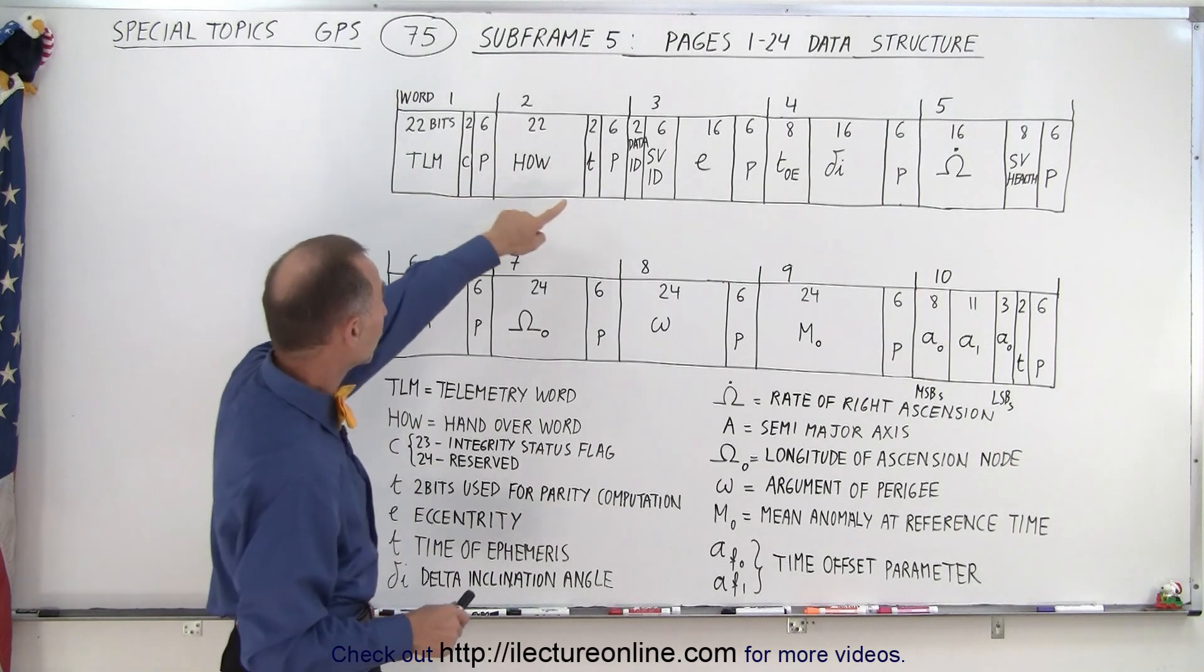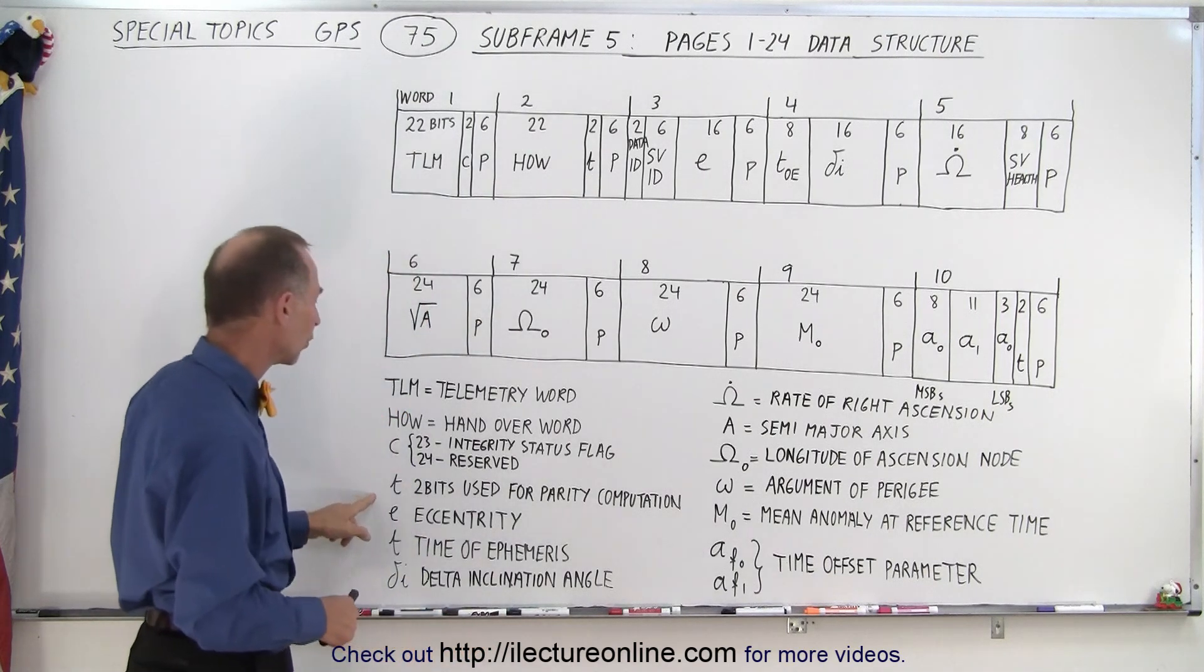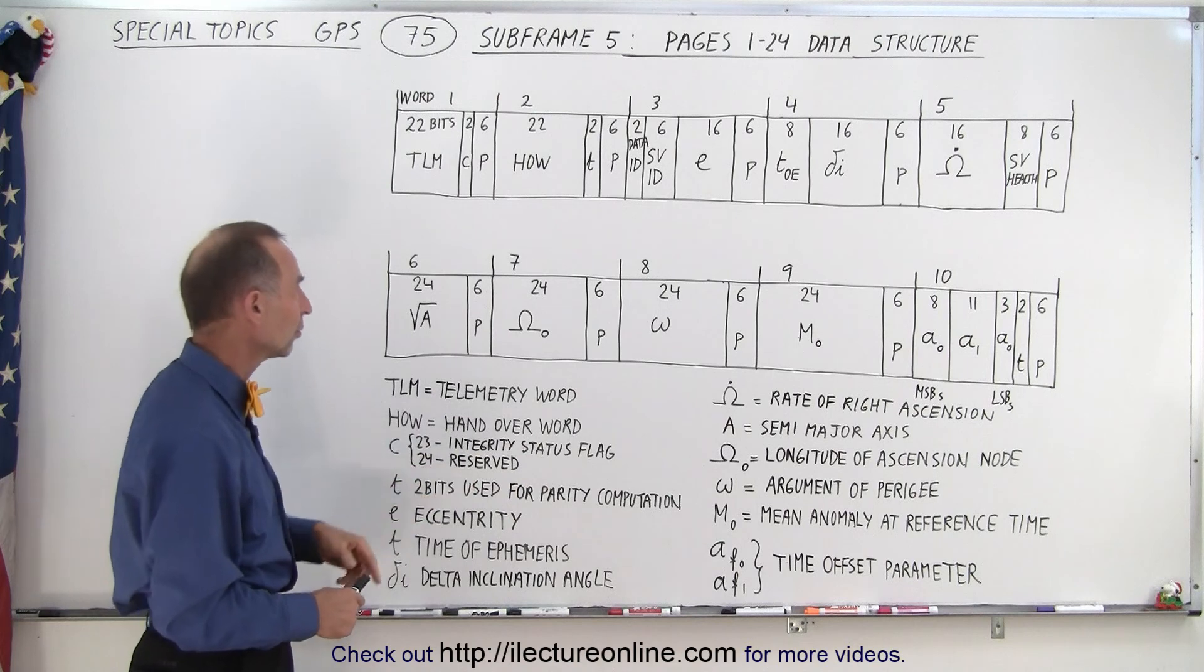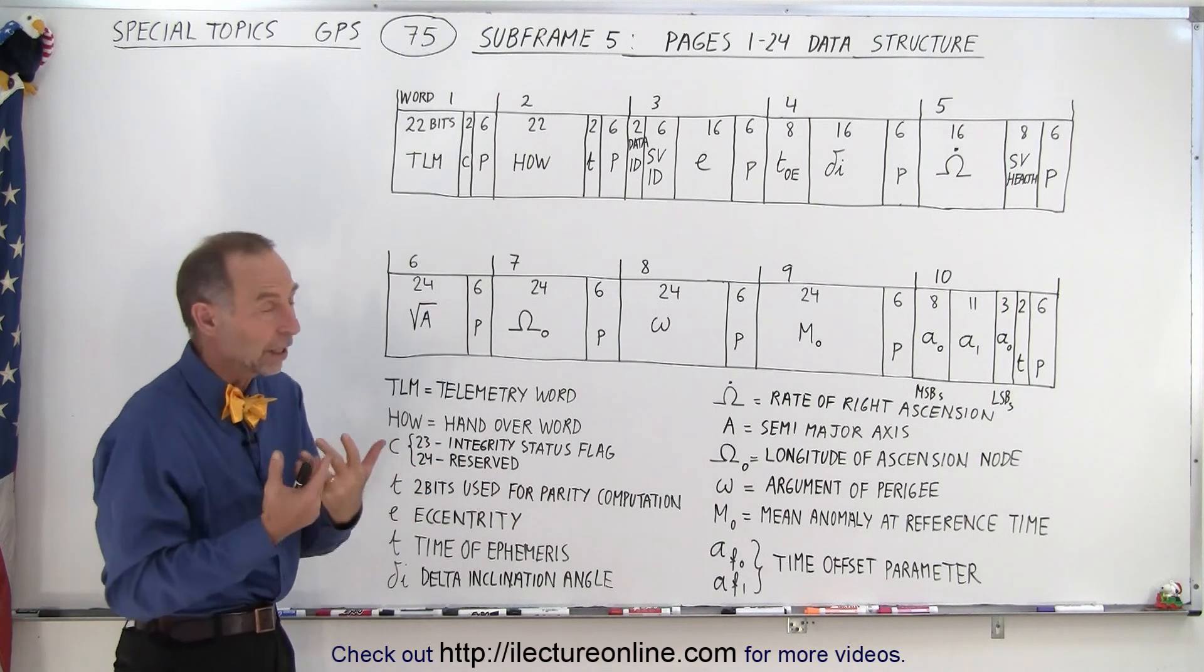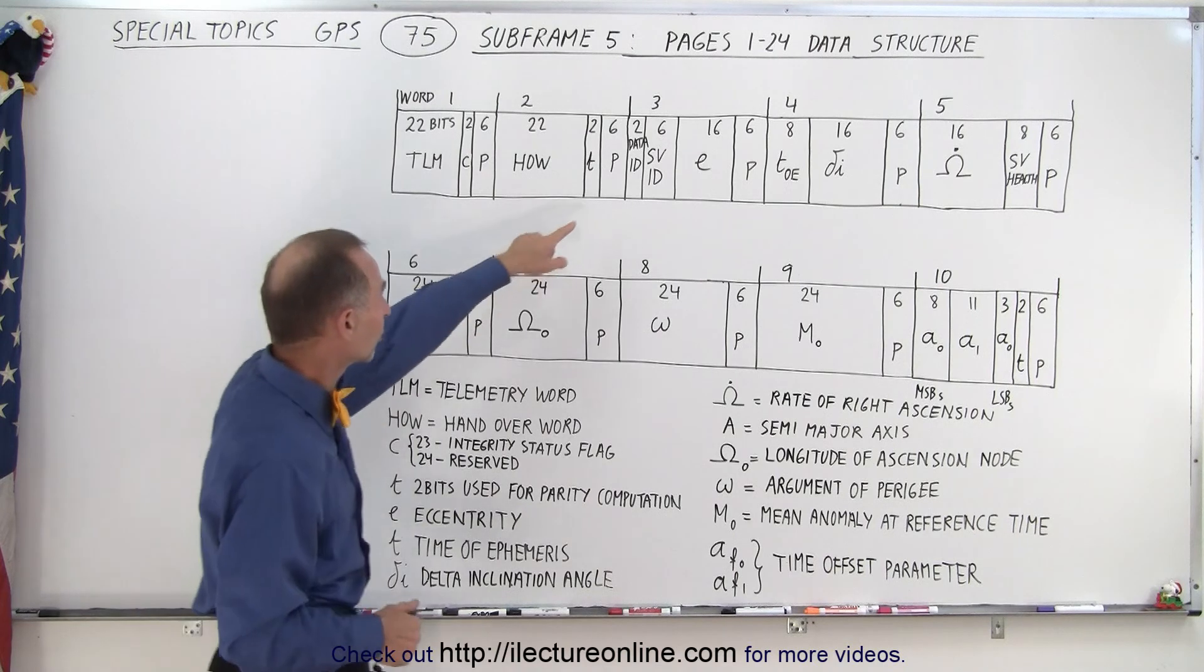Then let's see here. Then if we go to the second word we have these two bits right here with the letter T. Those are used for parity computations. Those don't have any specific meaning other than being used in parity calculations as well as these six bits over here.